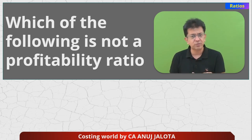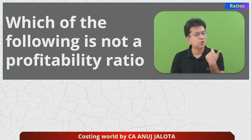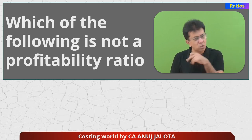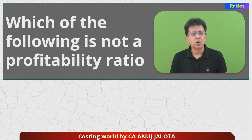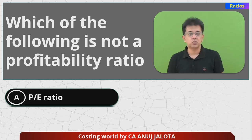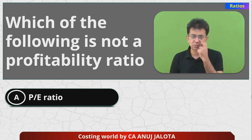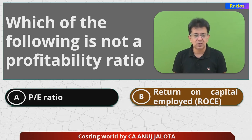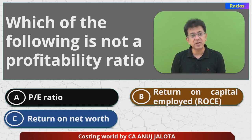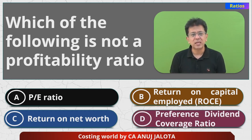In the chapter of ratios, you'll have done many types of ratios: your solvency ratios, then your coverage ratios, then your profitability ratios, return ratios. The four options are: A is Price Earnings ratio (PE ratio in short form), B is ROCE - Return on Capital Employed, C is Return on Net Worth, and D is Preference Dividend Coverage Ratio.